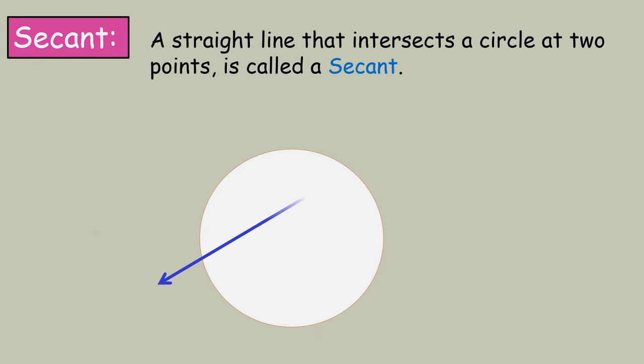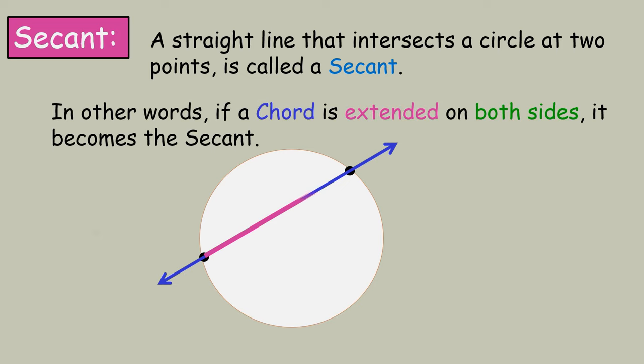Secant. A straight line that intersects a circle at two points is called a secant. In other words, if a chord is extended on both sides, it becomes the secant.